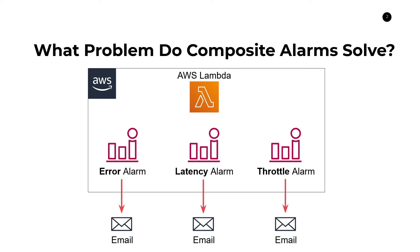This is all fine, but there's a lot of noise. If something happens with throttles, typically your latencies will start to elevate because clients are getting throttled, and your errors will also start to elevate as a result of those throttles. So one issue can trigger two other issues and you get bombarded with emails, making it really difficult to make sense of what is actually happening and what is wrong with your application.